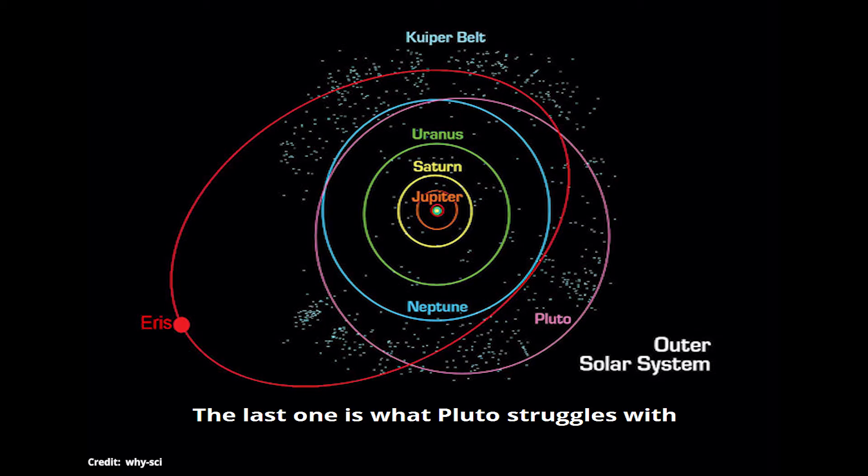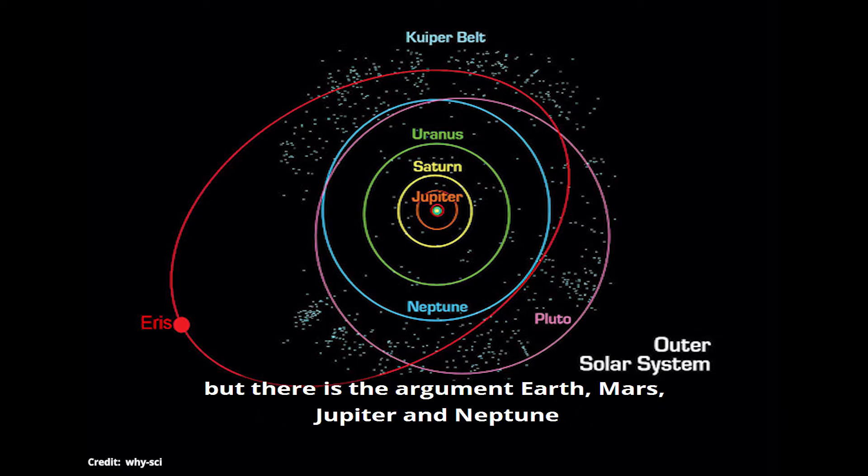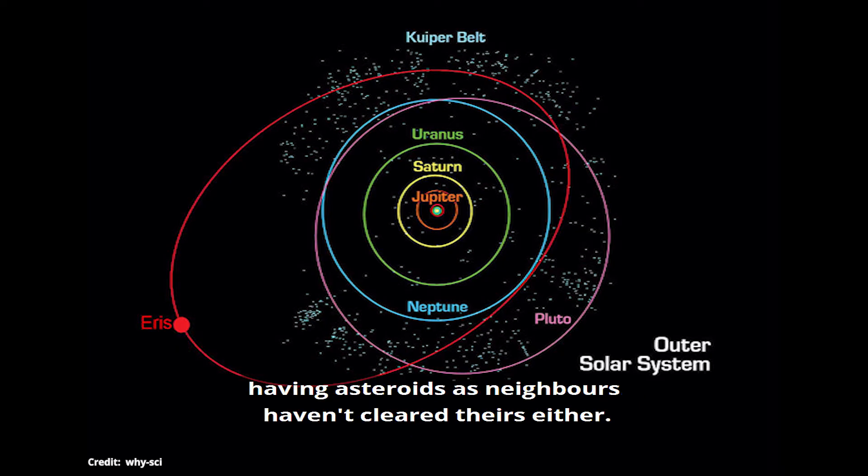The last one is what Pluto struggles with, as it hasn't cleared its orbit. But there is the argument Earth, Mars, Jupiter and Neptune, having asteroids as neighbors, haven't cleared theirs either.